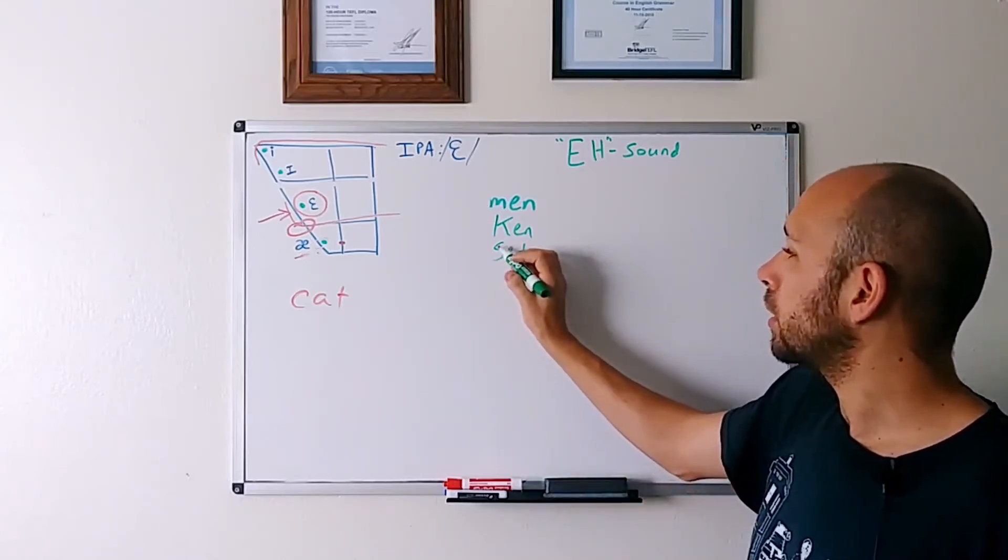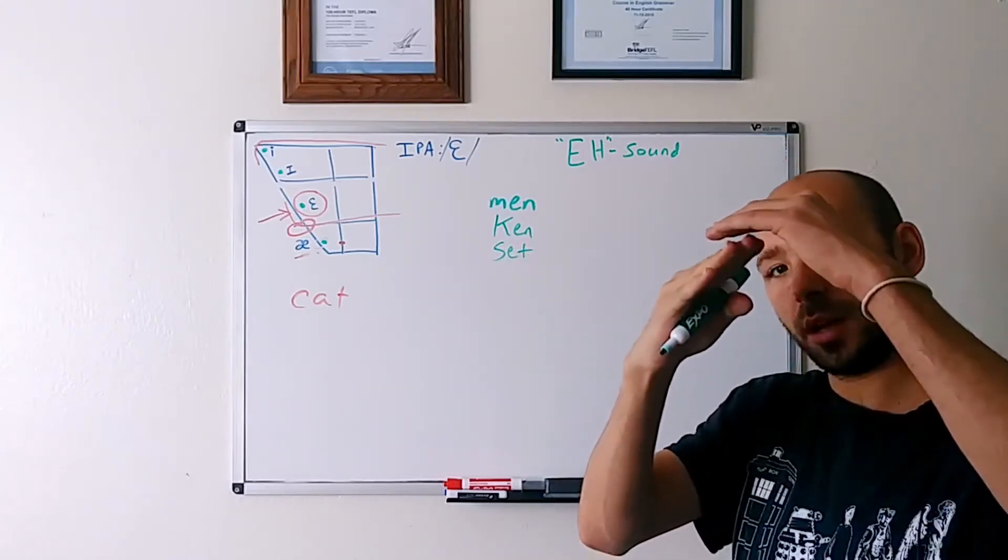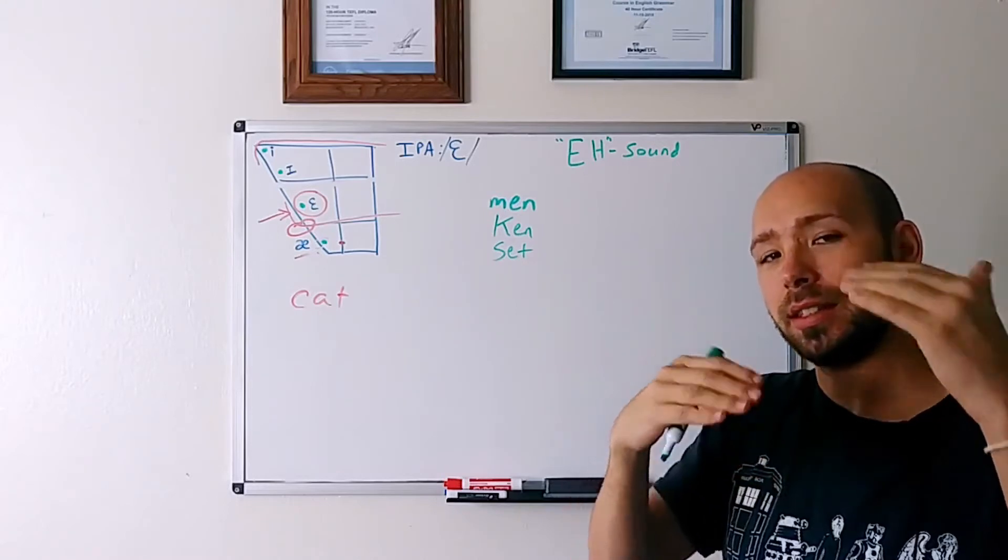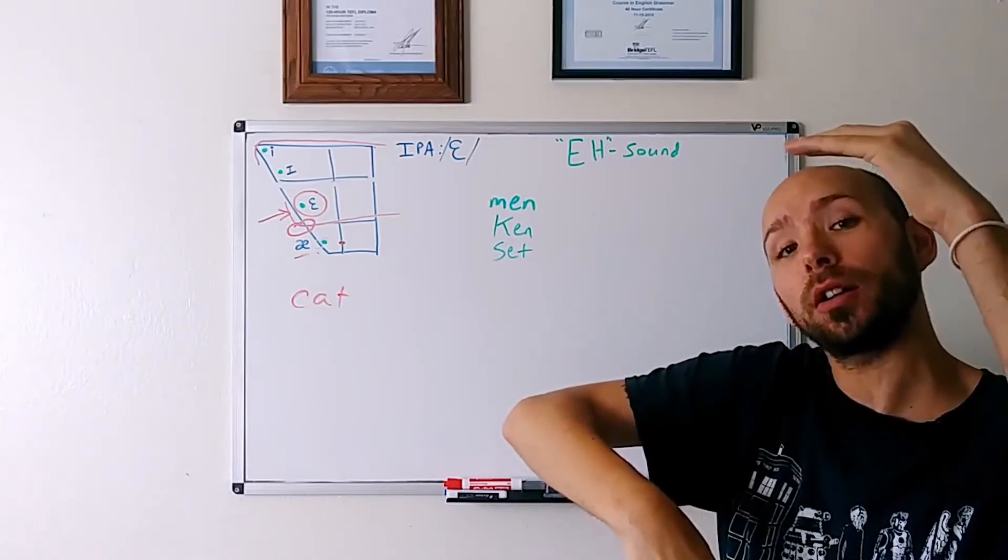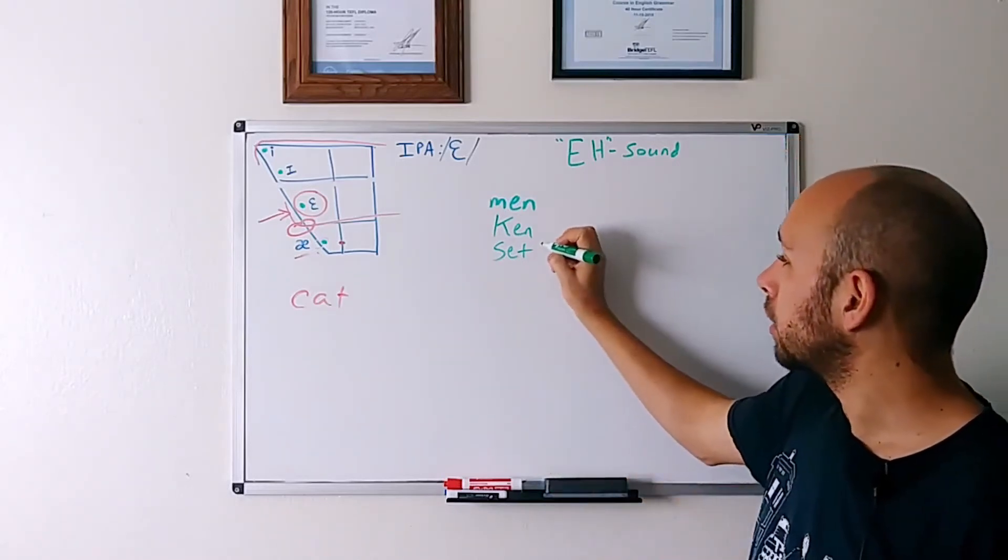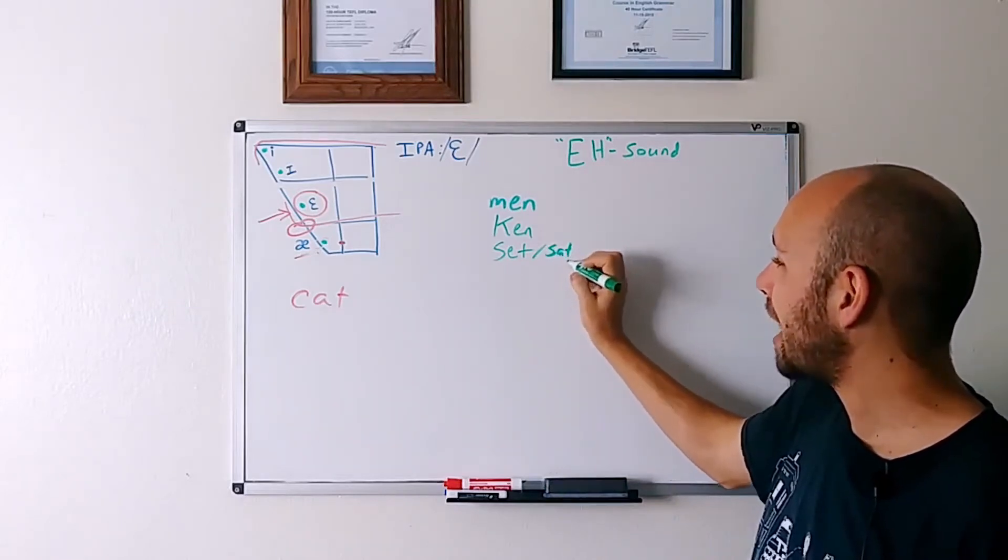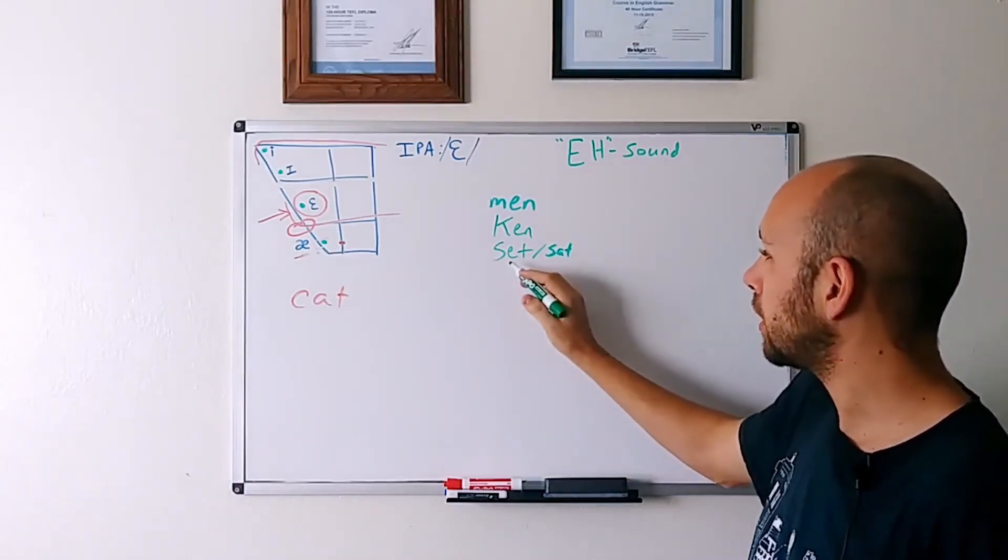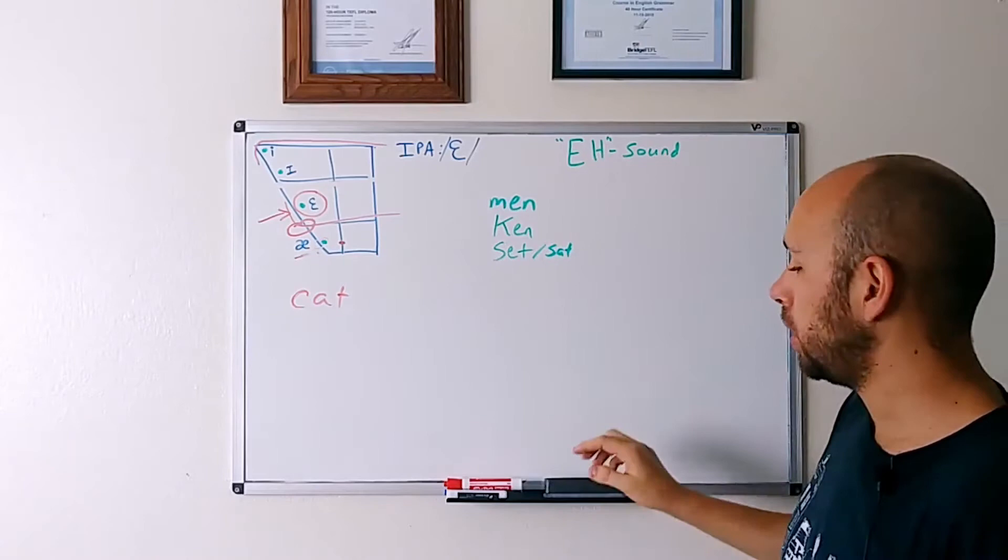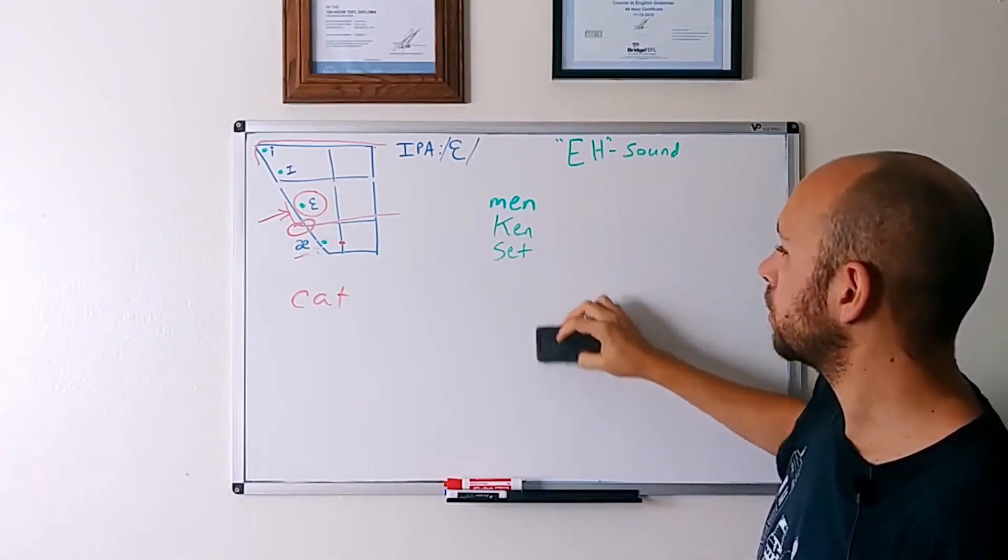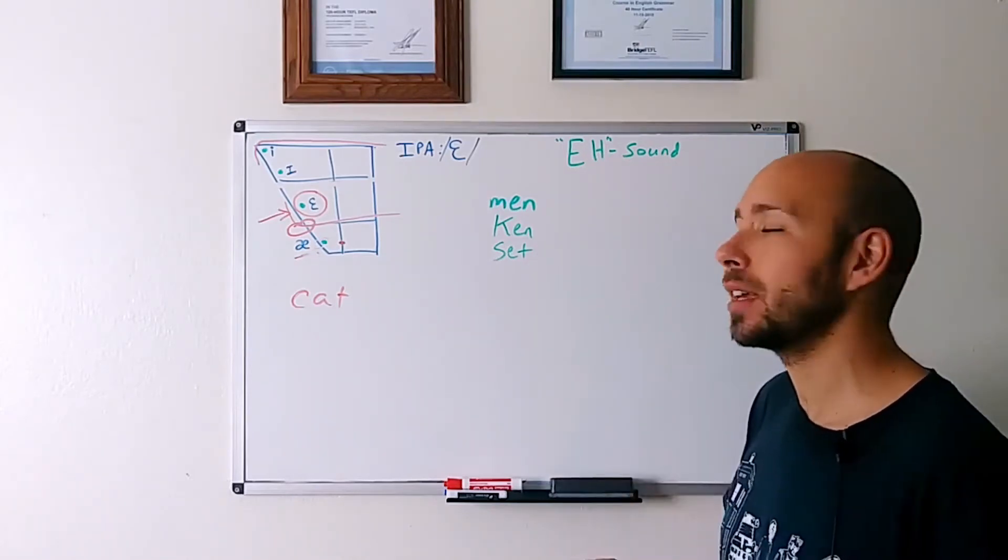Again, be careful with these consonants that are up at the top here. Set. It's really easy to go too far. Again, fourth sound, SAT. That's fourth sound. SET. Very easy to go too far. So be careful. SET. By the way, this word...